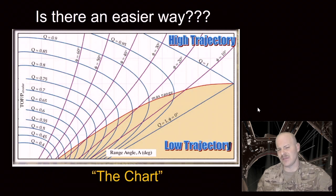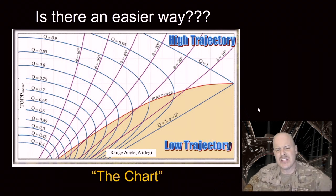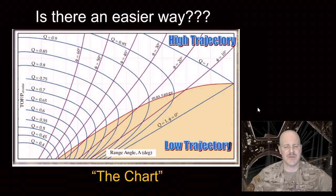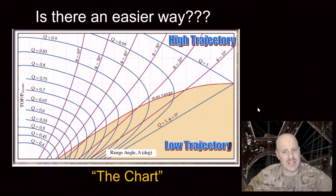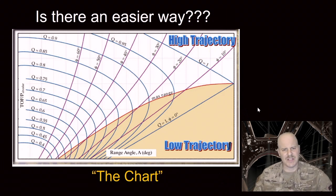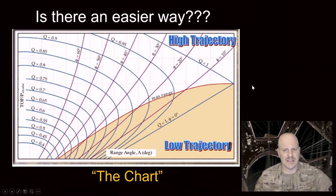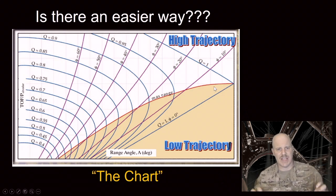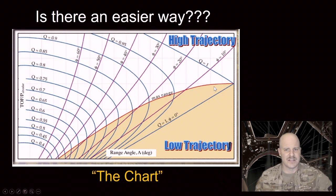We've talked about a lot of equations and a lot of different things. Is there an easier way? It turns out, yes — there's a table. I'm going to show you the next few slides on how to use the table. If you prefer, you can use the table instead of your equation sheet to get some of these answers. The table is called the chart, and you can find copies of it in your book.